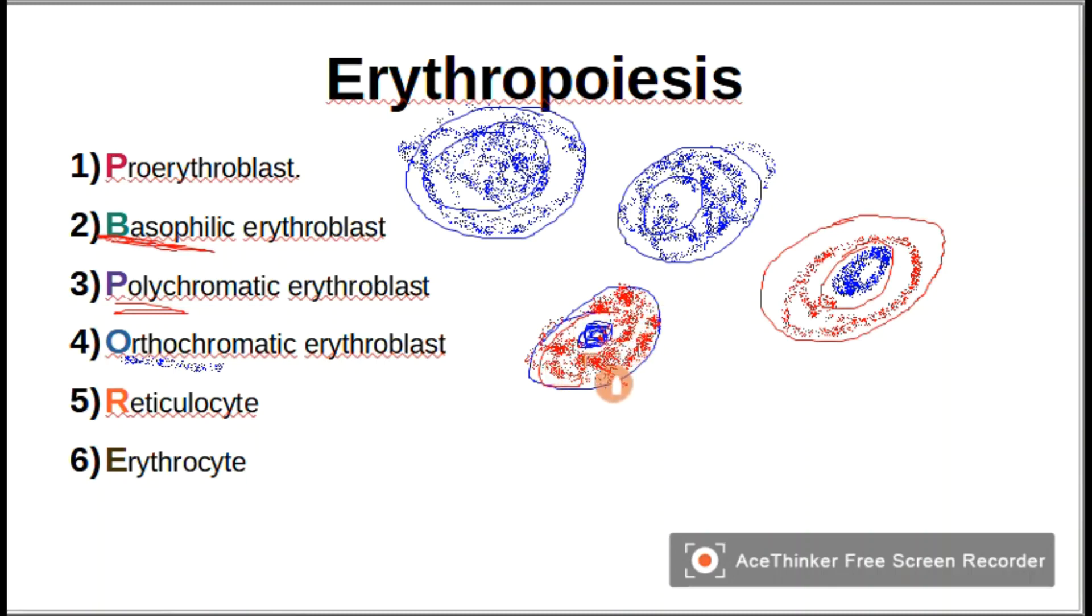The fifth one is reticulocyte. It is much smaller than the first one. The sixth one is erythrocyte.